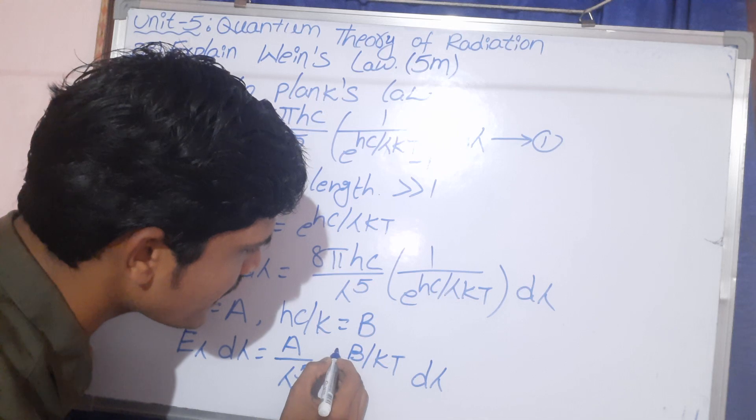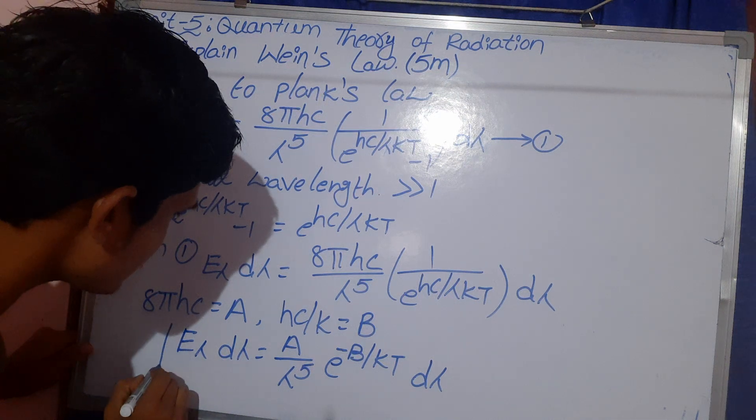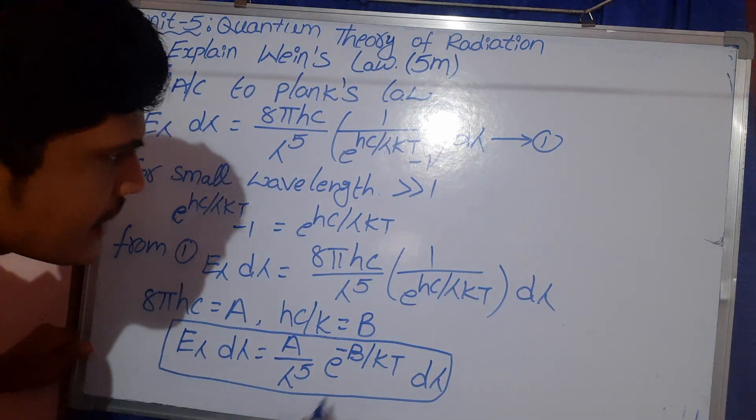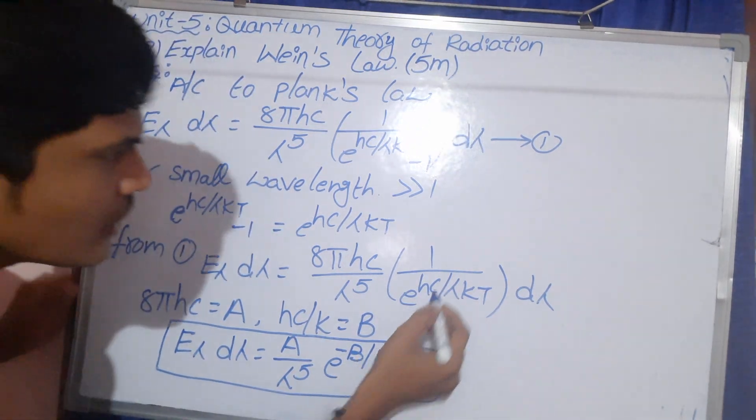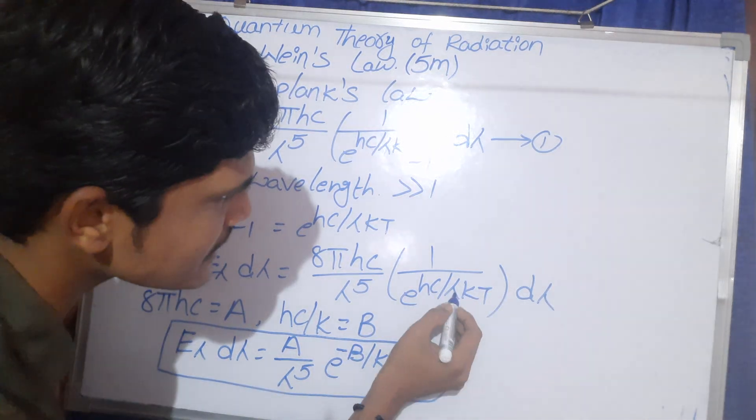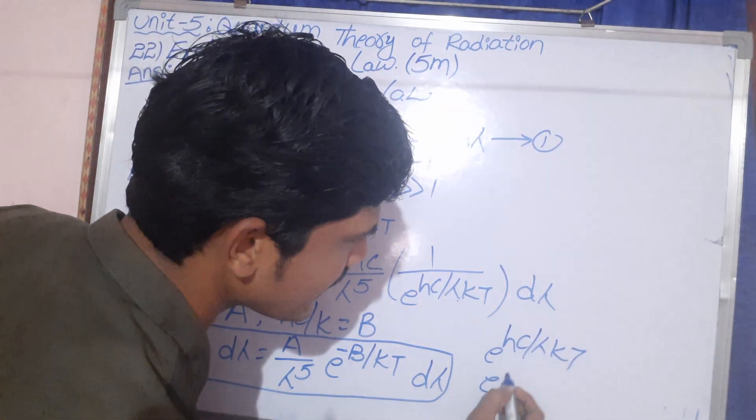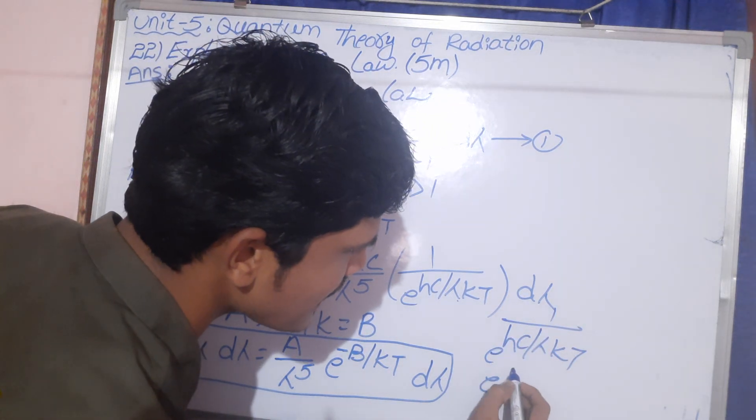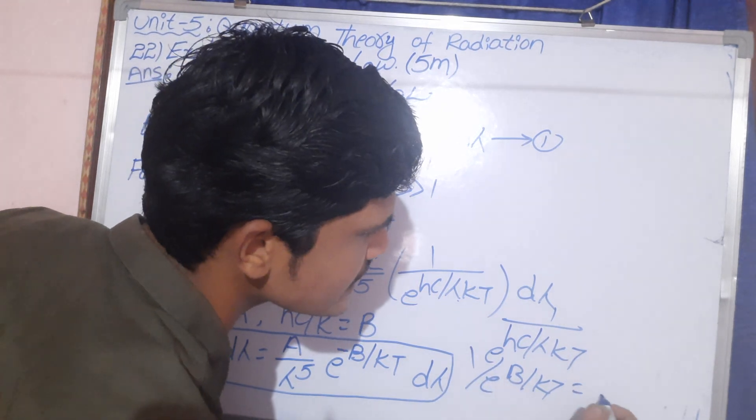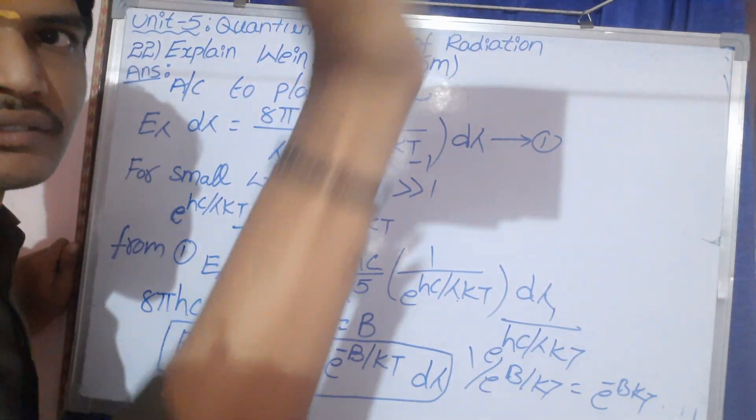So this term is written by minus b by kt. This equation is also called Wien's law. So 1 by E power hc by lambda kt, hc by lambda means b by kt. 1 by this is E power minus b by kt. This is the Wien's formula.